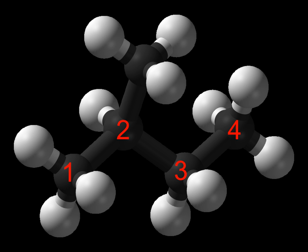IUPAC defines alkanes as acyclic branched or unbranched hydrocarbons having the general formula CnH2n+2, and therefore consisting entirely of hydrogen atoms and saturated carbon atoms. However, some sources use the term to denote any saturated hydrocarbon, including those that are either monocyclic or polycyclic, despite their having a different general formula — cycloalkanes, or CnH2n.